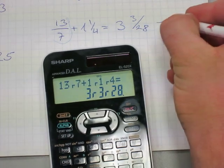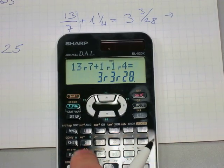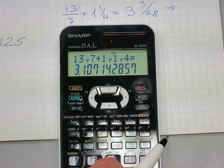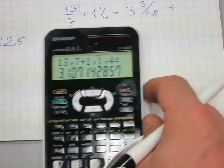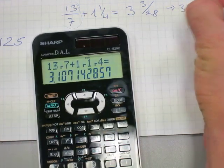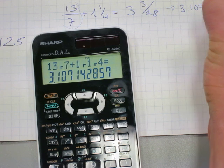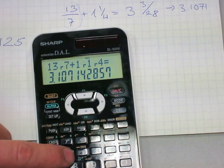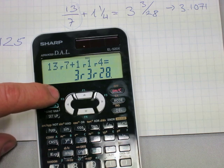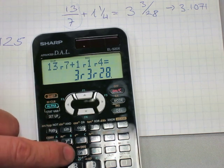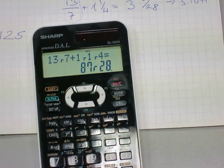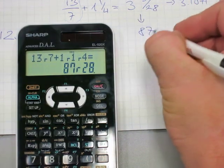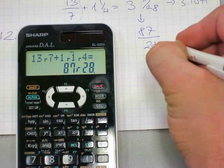If you want an improper fraction out of it, you press the ABC button here again. And sorry, this one comes up first. If you want a decimal out of it, it's 3.1071 and the rest of the digits. You press it again. You go second function and ABC button and you're going to get your improper fraction out of it as 87 twenty-eighths.